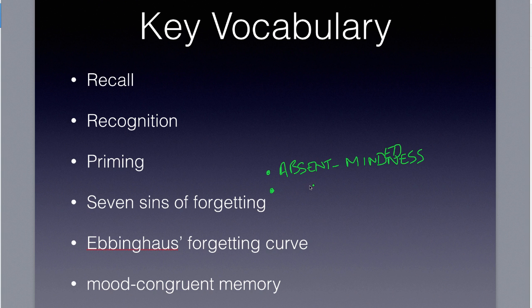The second sin is transience — our memories simply start to fade over time. If you were in sixth grade, you probably remembered that year really well. But now as a junior or senior, looking back, there are many memories you don't remember quite as well as you would have four or five years ago when you were in sixth grade. That's transience.